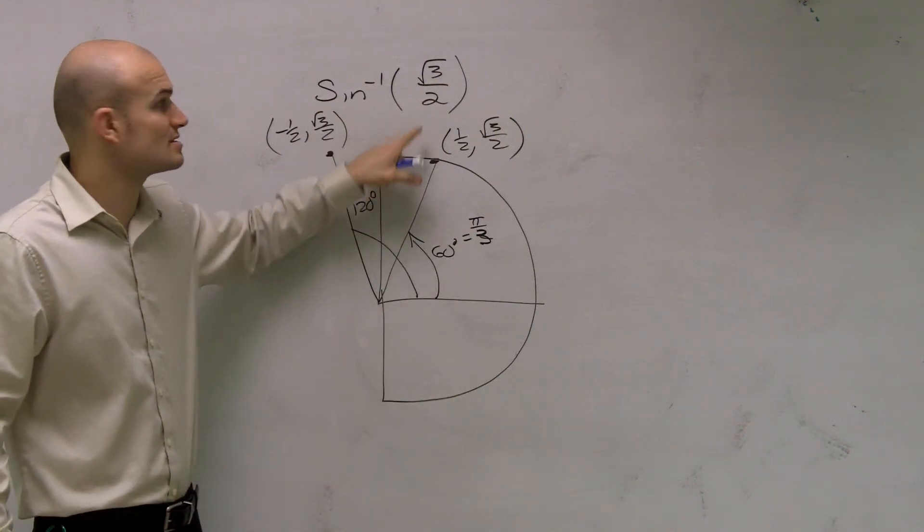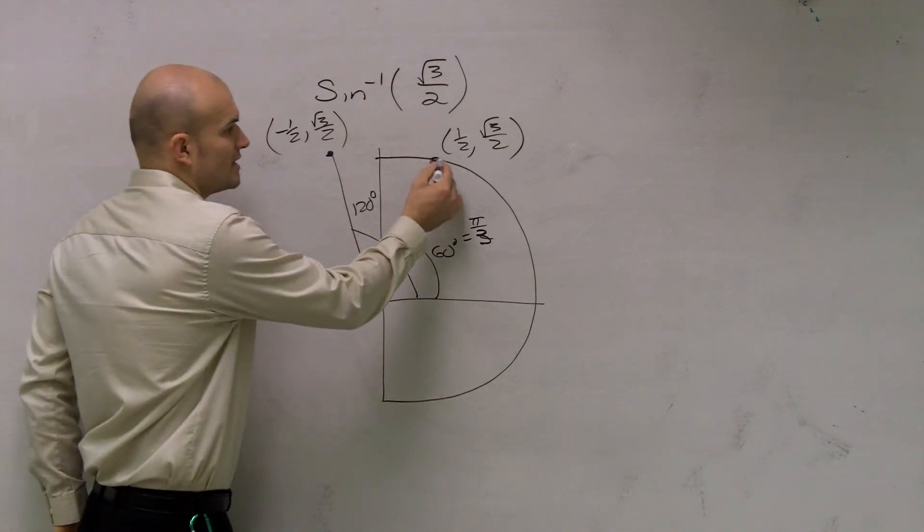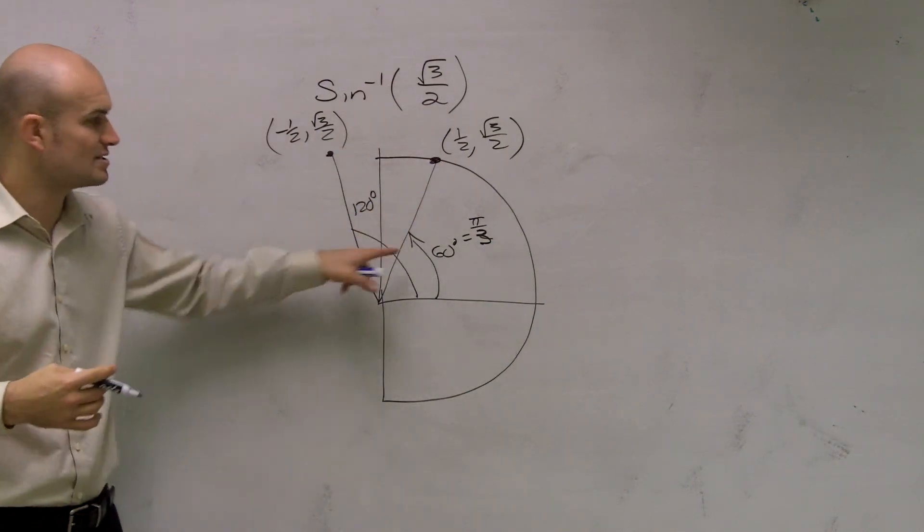Therefore, the inverse sine of radical 3 over 2 is only going to be this point right here, which is 60 degrees.